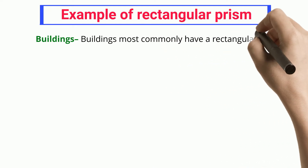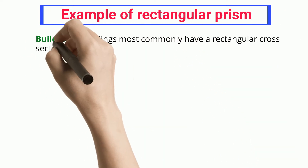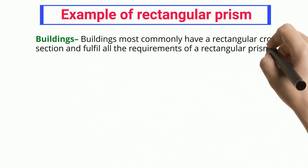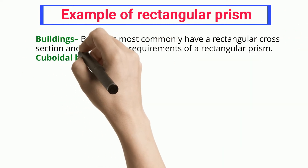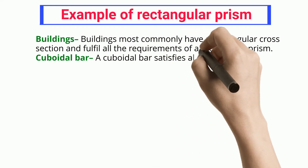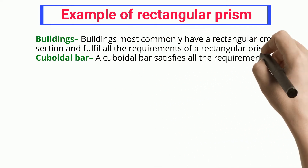Buildings: buildings most commonly have a rectangular cross-section and fulfill all the requirements of a rectangular prism.